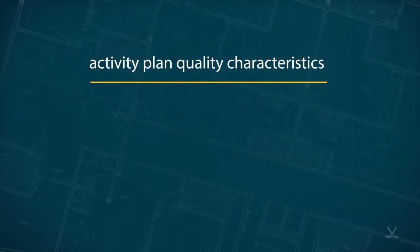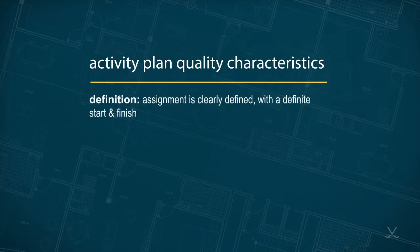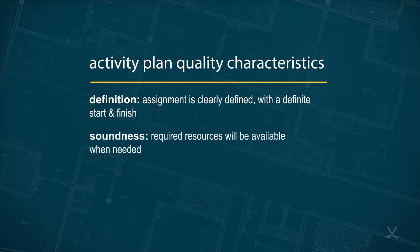Activity planning is much more likely to be reliable if the plan exhibits four quality characteristics. Definition: the assignment is clearly defined with a definite start and finish. Soundness: all required resources will be available when needed.